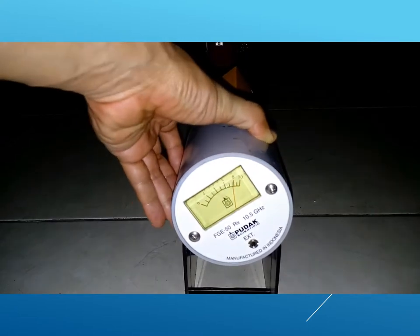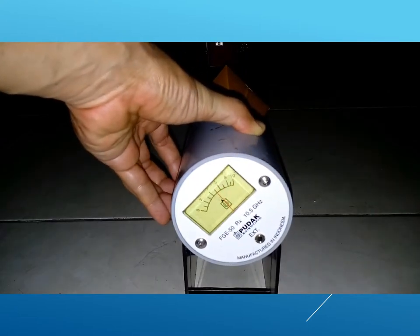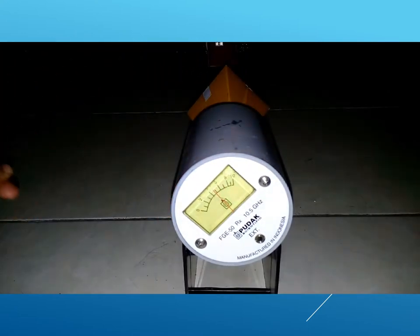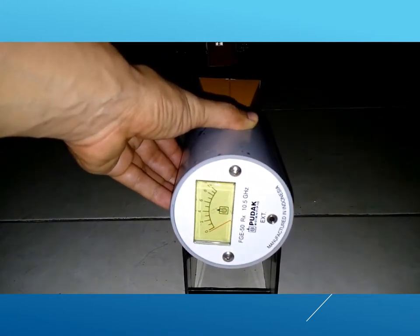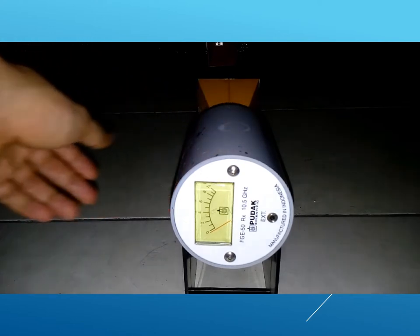When the receiver is rotated by 45 degrees, the intensity drops by around 50%. When it is rotated further to 90 degrees, the intensity drops to zero.